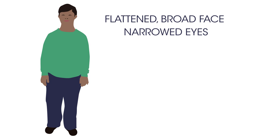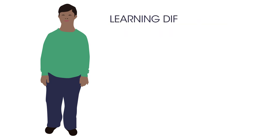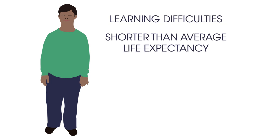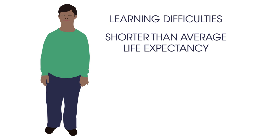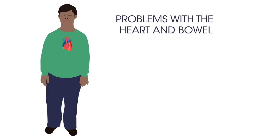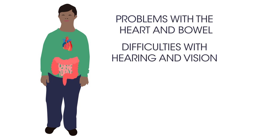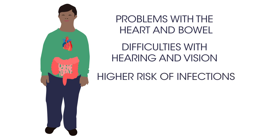People with Down's syndrome may have a lower than average IQ and a shorter than average life expectancy. Some conditions more common in people with Down's syndrome include problems with the heart and bowel, difficulties with hearing and vision, and a higher risk of infections. However, everybody who has Down's syndrome may be affected in different ways.